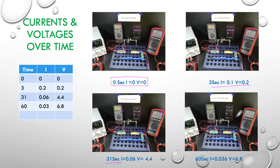Then at the 60 second mark, 60 seconds being one minute, our current has dropped to 0.36. So it's come down and our voltage has continued to rise now at 6.8 volts.